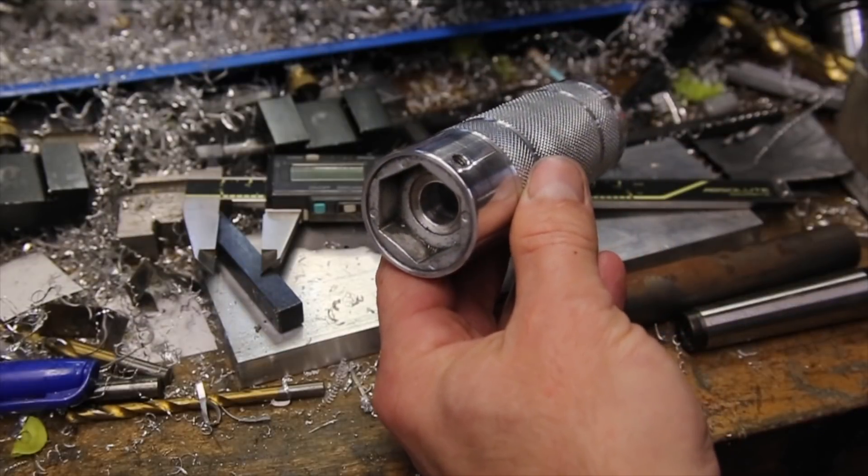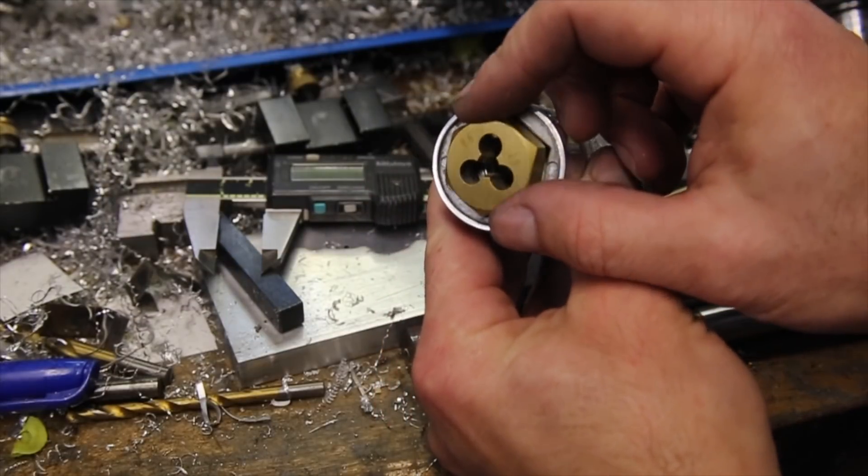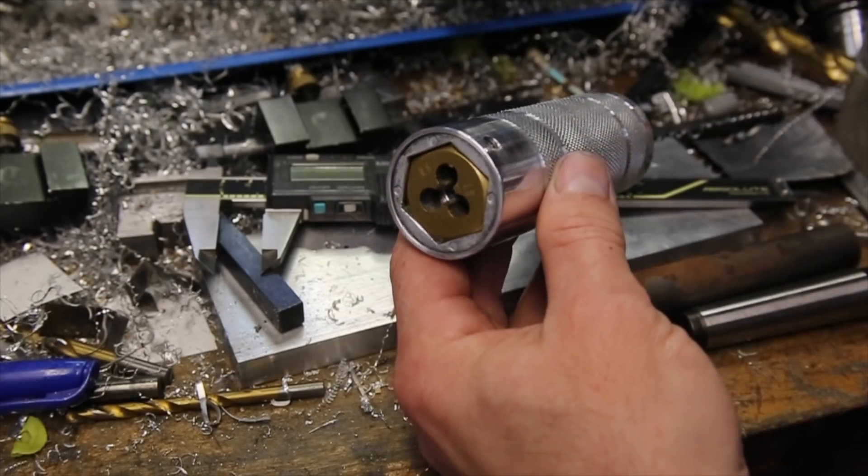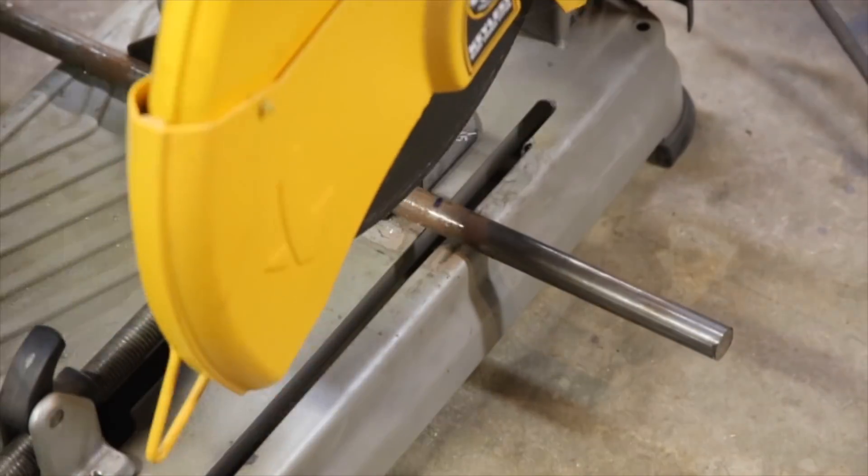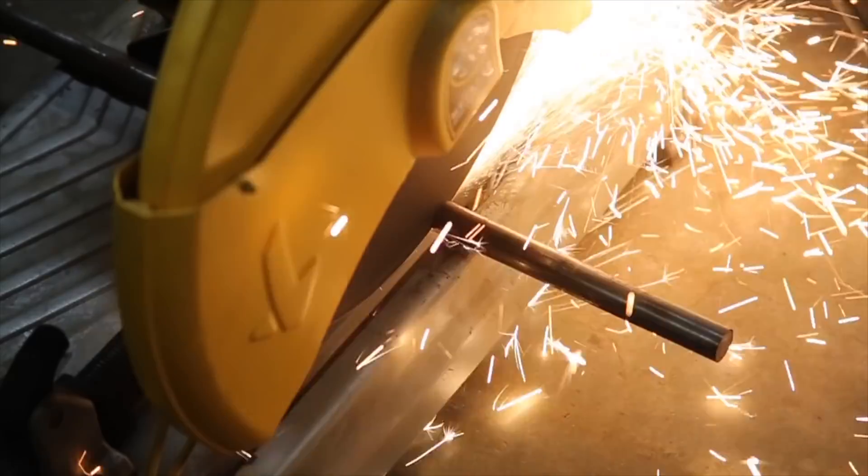Previously, in part 1 of this project I sacrificed the hex die holder from my tap and die set to make the handle for the tailstock hex die holder. This is part 2, making the guide.